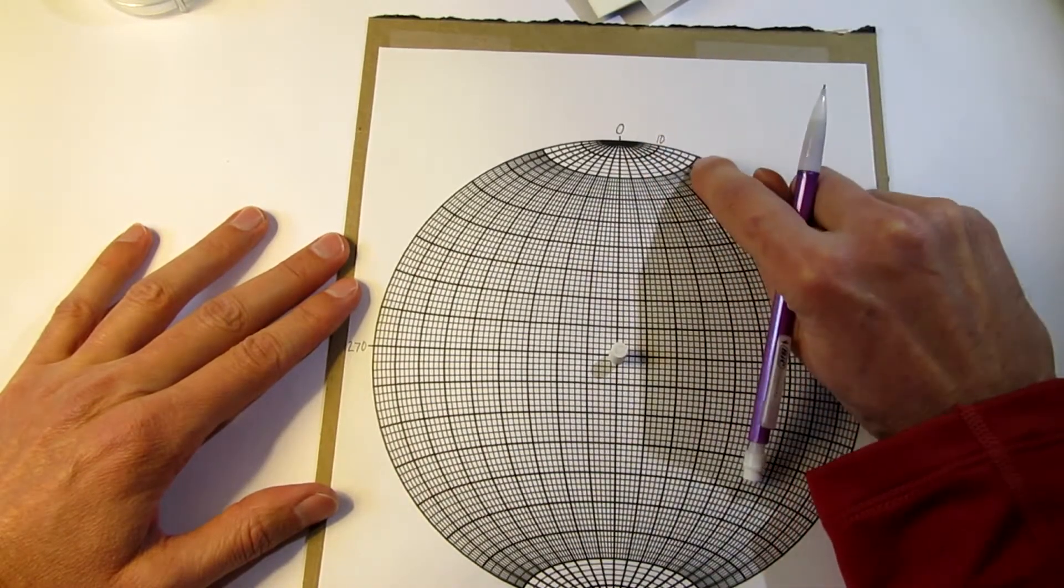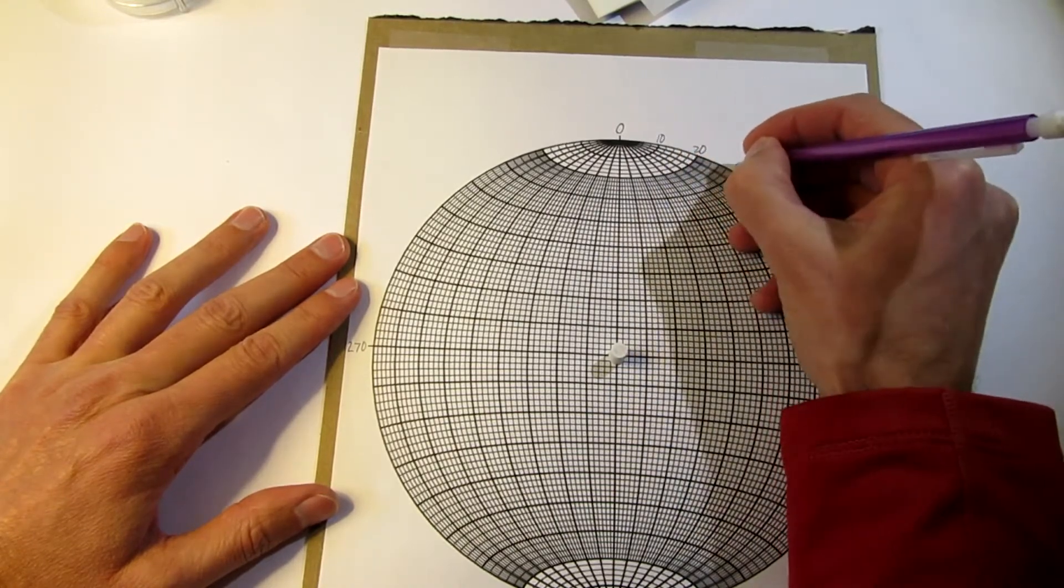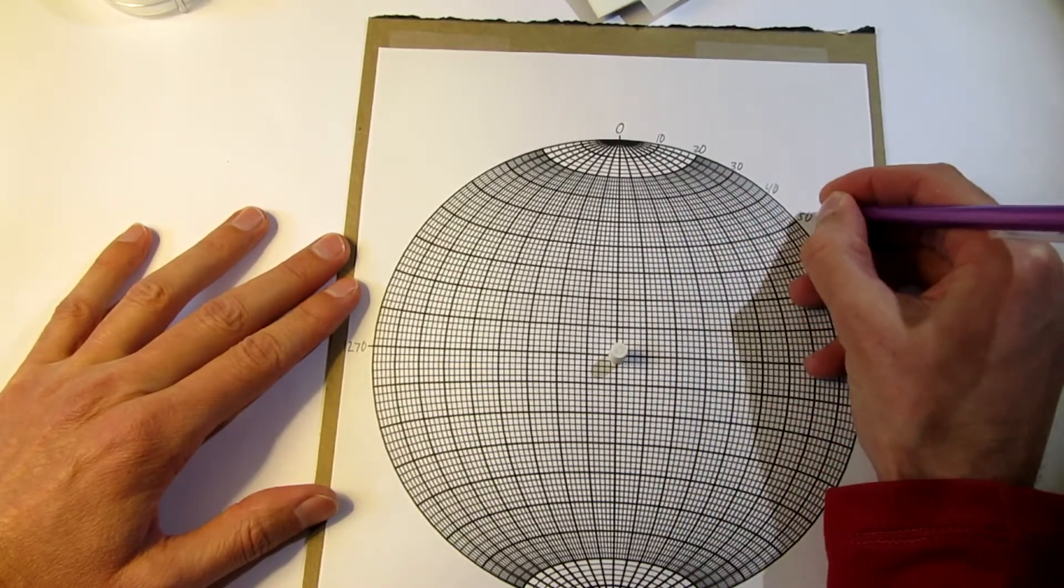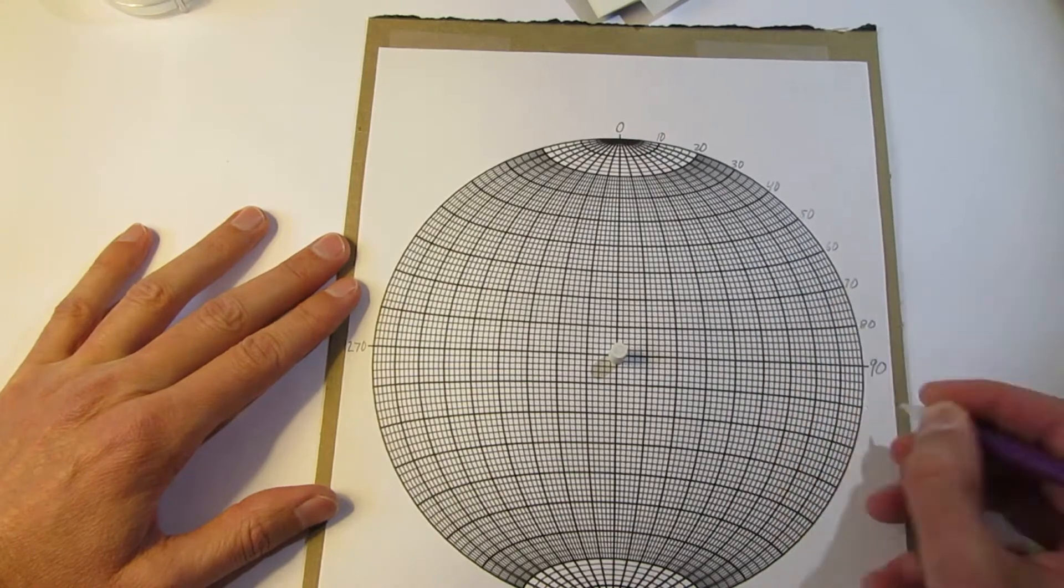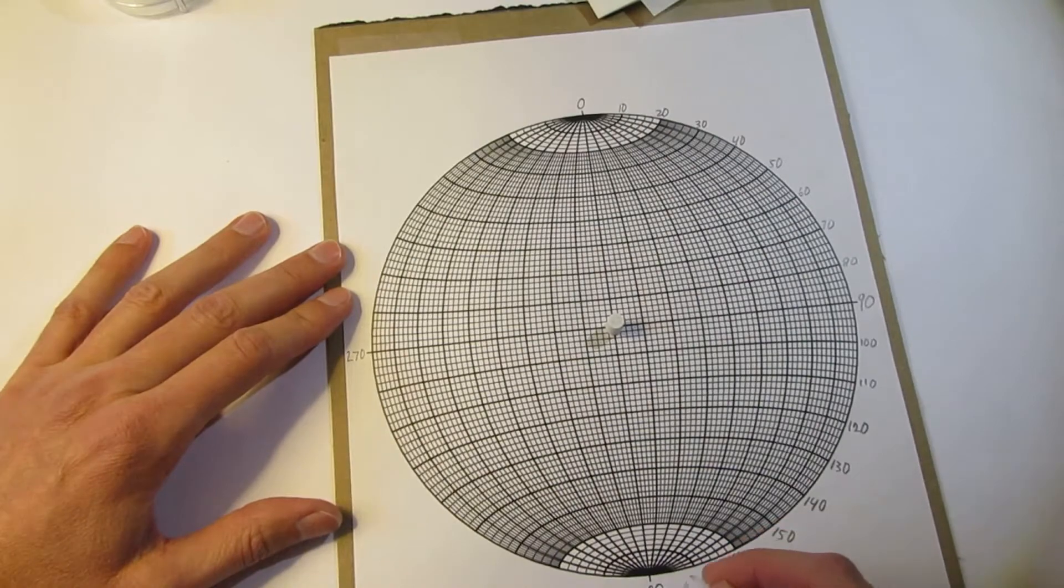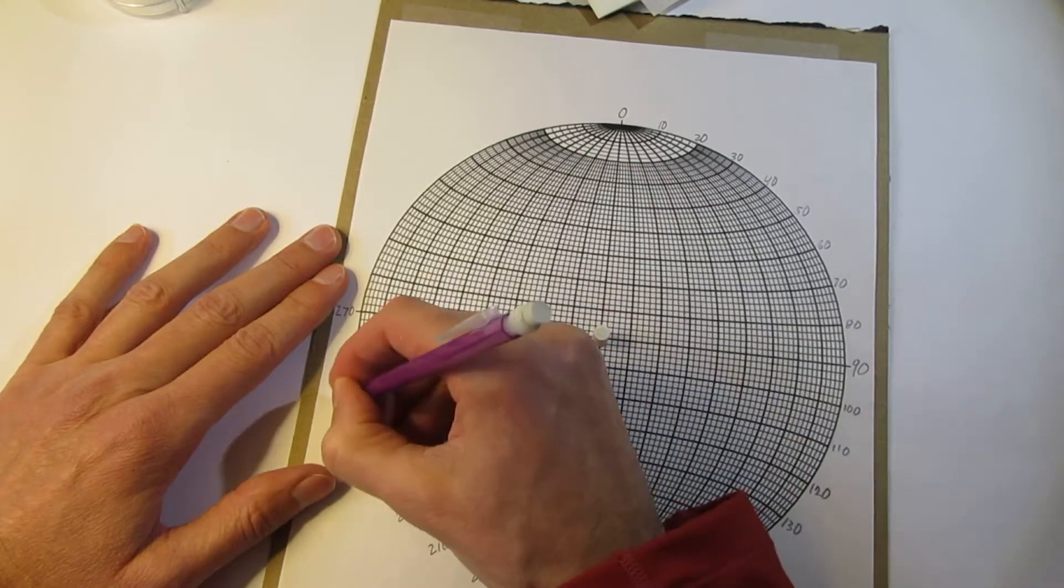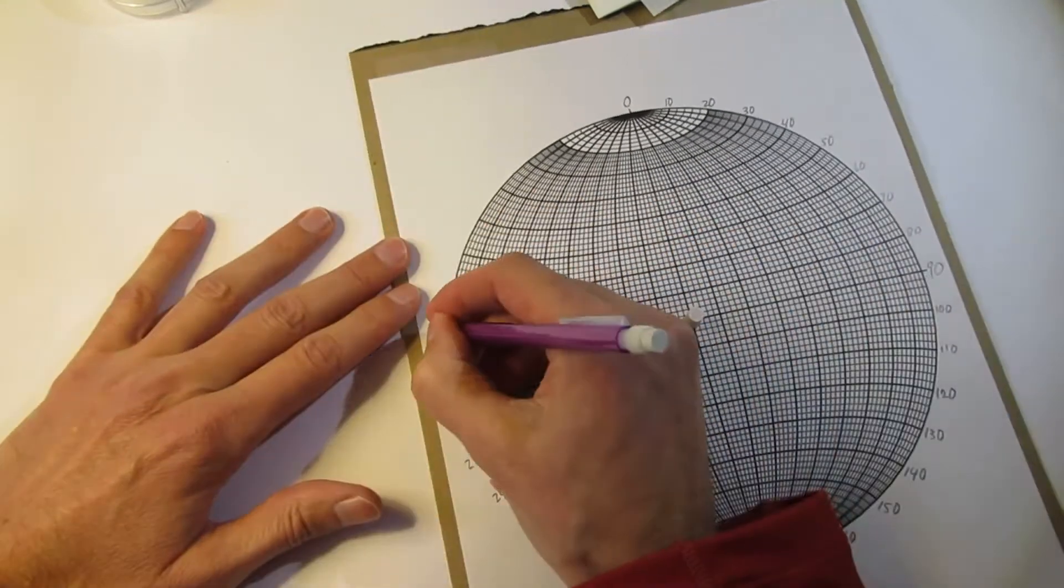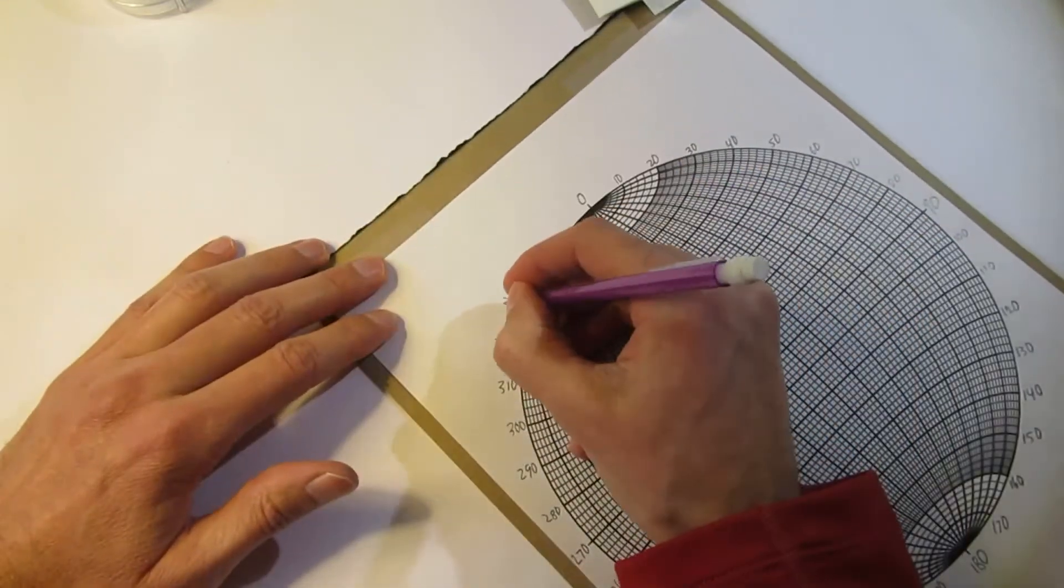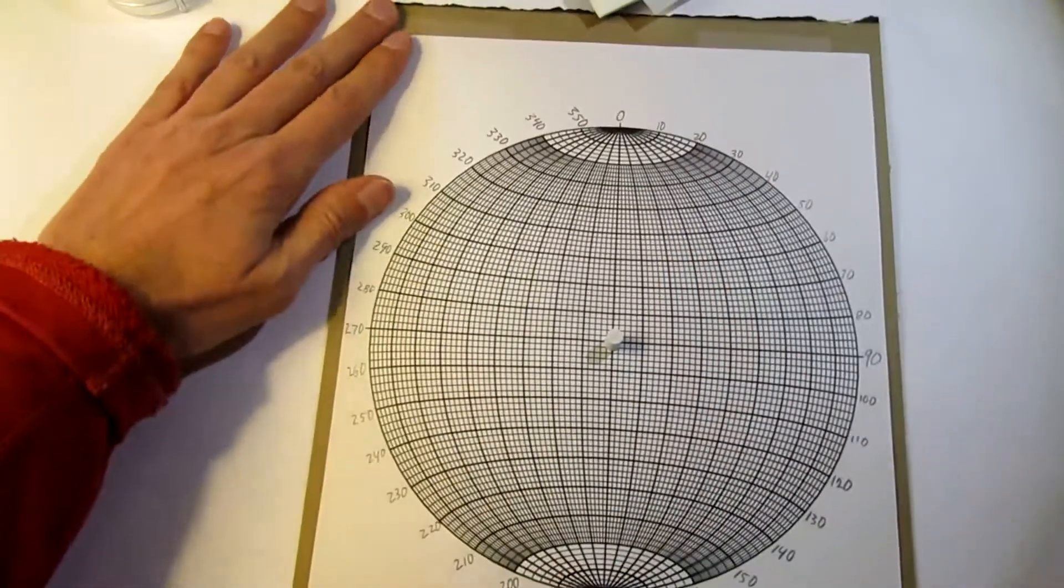So you can see there's a heavier line at every 10 degrees. Go ahead and mark those.